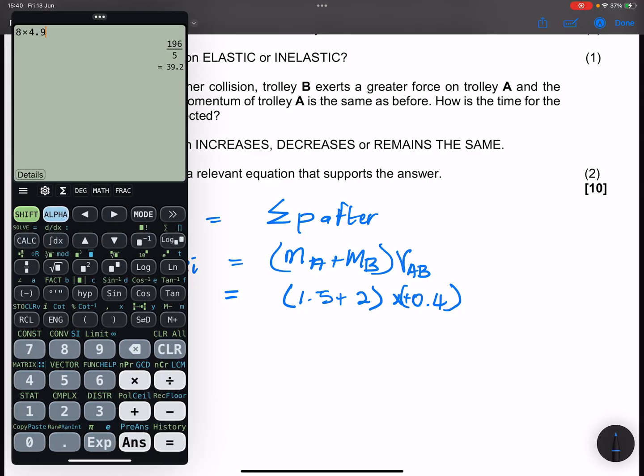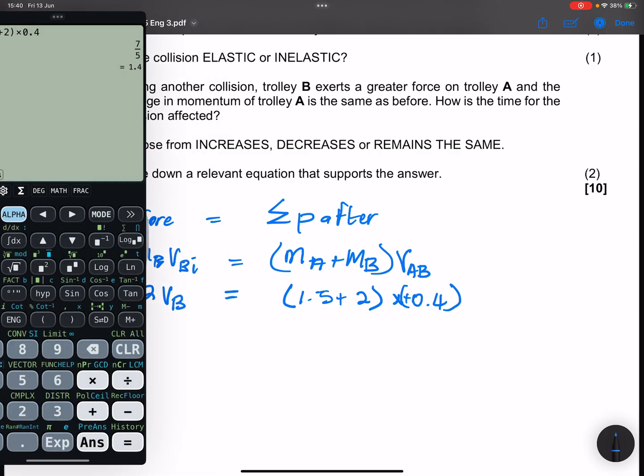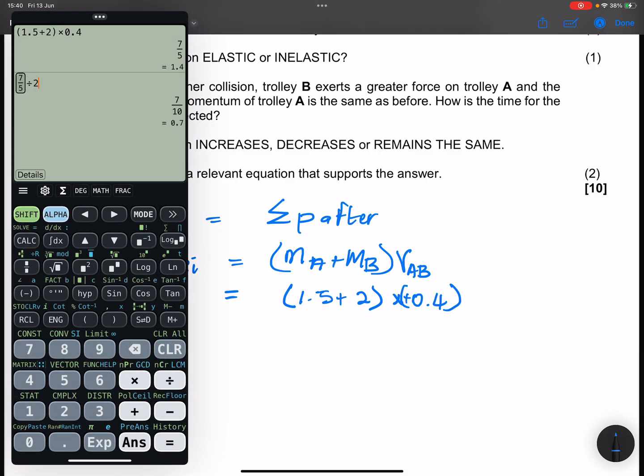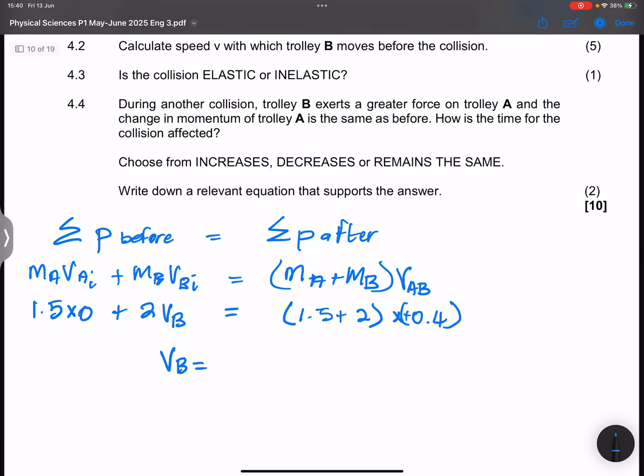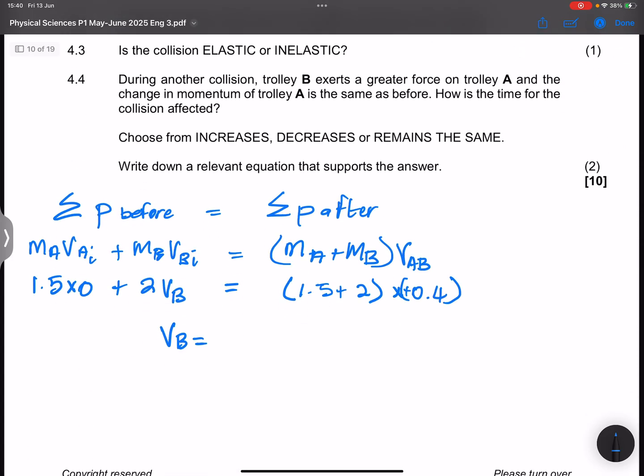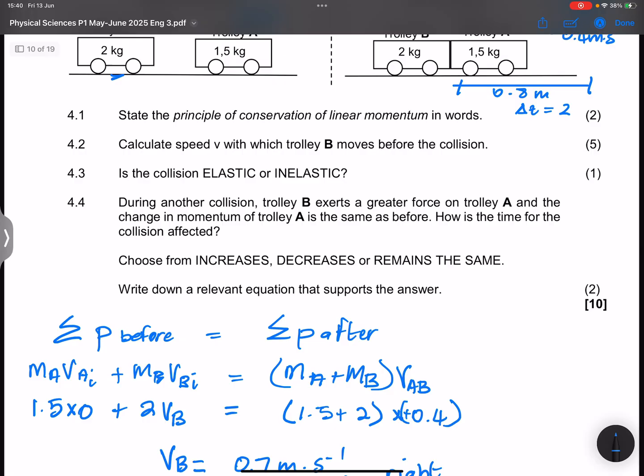So let's get to it. We've got 1.5 plus 2, that's times 0.4. In this case, I need to divide that by 2. That gives me 0.7. So the velocity of B before collision was 0.7 meters per second to the right. And there it is.